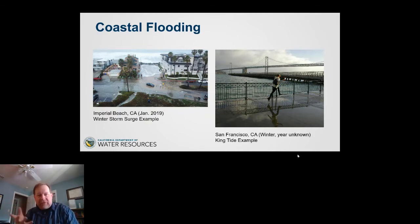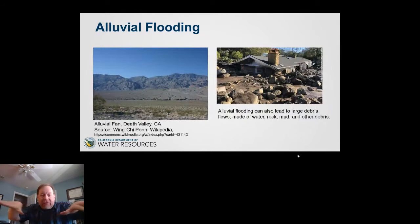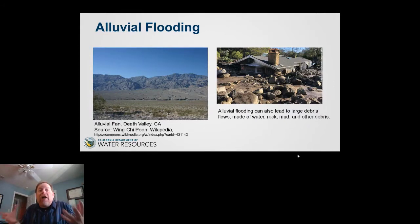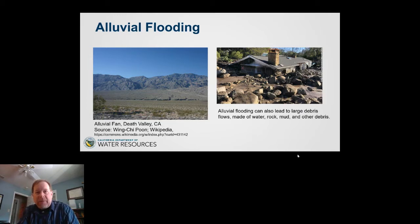The third type of floodplain often forgotten is alluvial flooding. A great photo of Death Valley shows fans spreading out — a classic alluvial fan. And a photo on the right shows the consequences of flooding in these areas — debris flows or mud flows that cause massive amounts of damage, depending on how much water moves the sediment material. These are really hard to map and can clog normal channels, leading to the braiding seen in that photo.